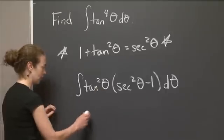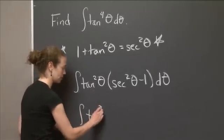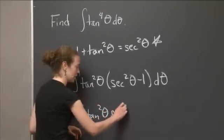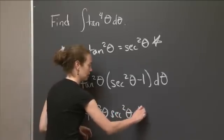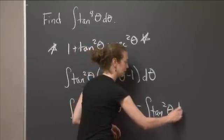All right, now let's look at what we get here. If I distribute this, I get integral of tan squared theta, secant squared theta d theta, minus the integral of tan squared theta d theta.